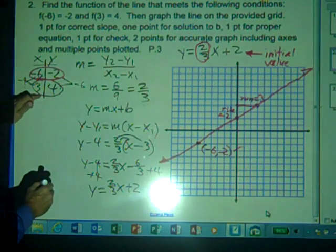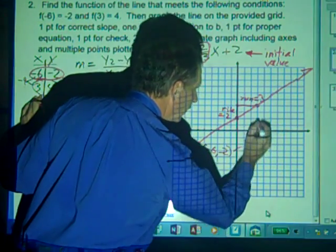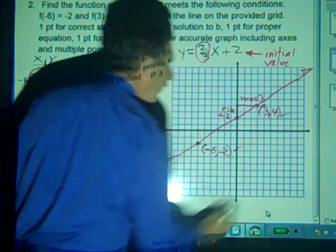Lastly, we take our second point, 3 comma 4, so we go to the right 3 units and up 4 units, and we see we have 3 comma 4 resting on the line.